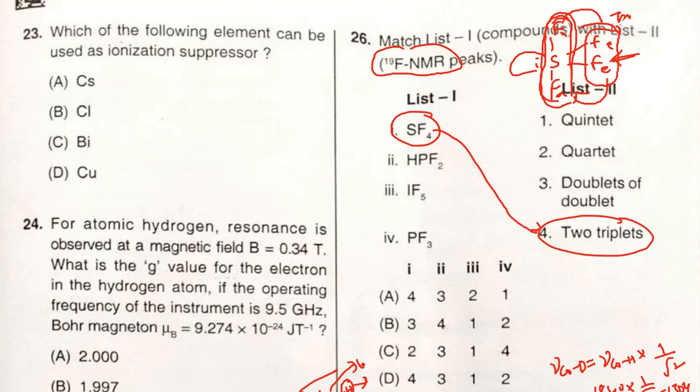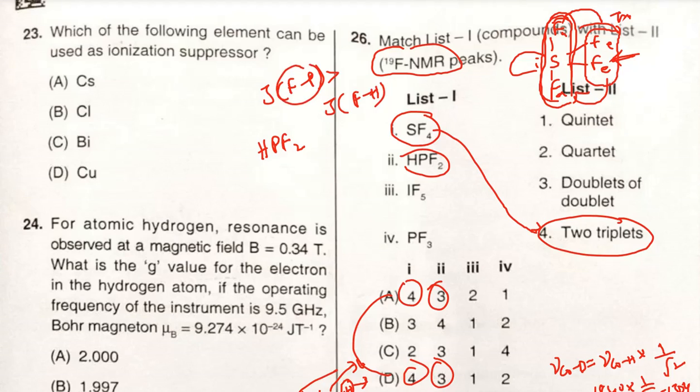Now HPF₂ - what is it going to give? Doublet of doublet. How can you get doublet of doublet? Here you can consider the coupling of F-P should be considered first when compared with the coupling of F-H. F-P: here only one phosphorus is there, that's why it will give one doublet. Now we need to look at F-H: one hydrogen is there, that's why here another doublet. So total doublet of doublet.